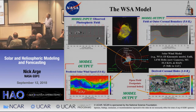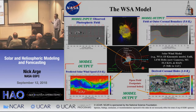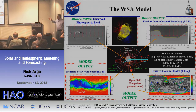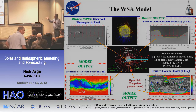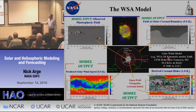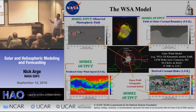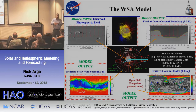The WSA model is one of the simpler models — a potential field-based type model. It's a composite of a potential field model interlinked with the Schatten current sheet model, pulling the field out further into space. It's used to drive more advanced models like LFM Helio (now called Gamera), Enlil, and so forth. You start with a map as the inner boundary condition and get the global magnetic field solution.